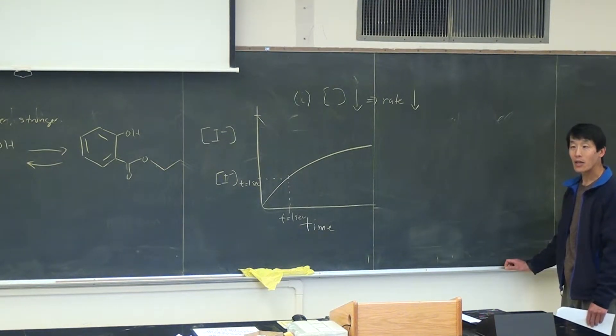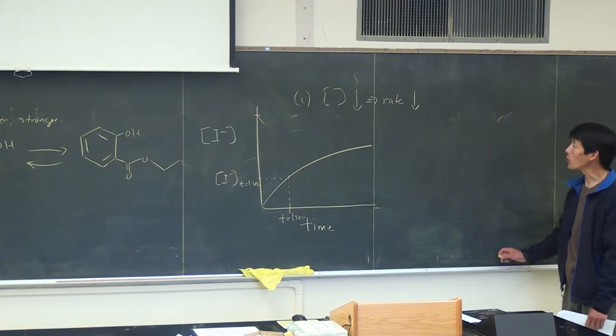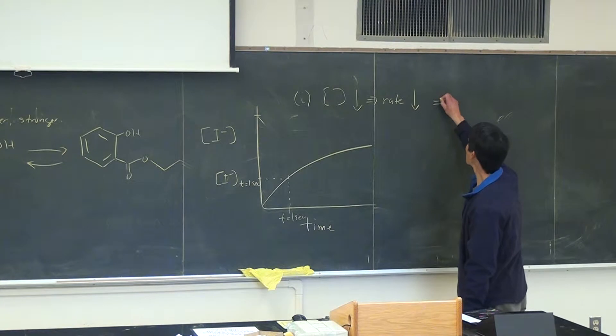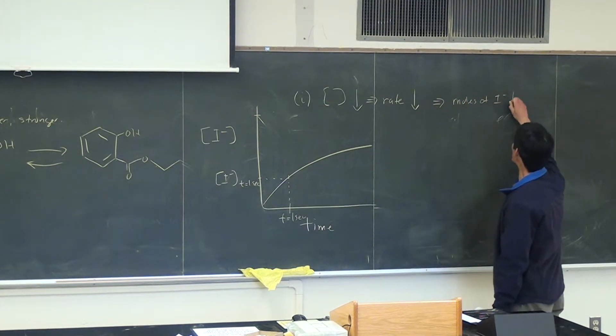Will it be the same as with one liter, larger or smaller? It should be smaller. So that means that the amount of moles of I2 should decrease.